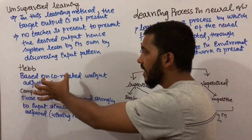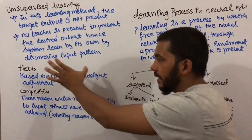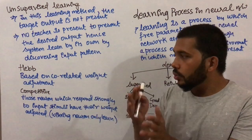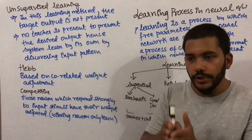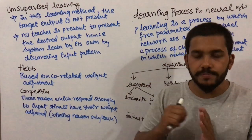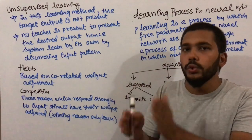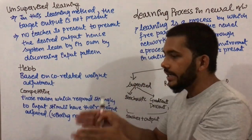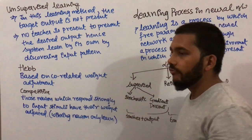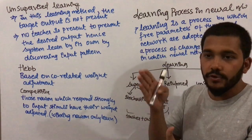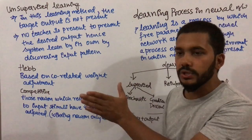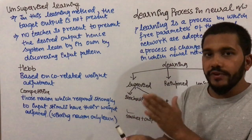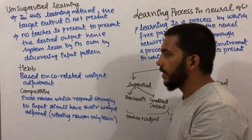Hebbian learning is based on correlated weight adjustment. When one neuron and another neuron are present, the weight between the two neurons is adjusted. The system learns through this weight adjustment — it learns by relating the weight of one neuron to another neuron.